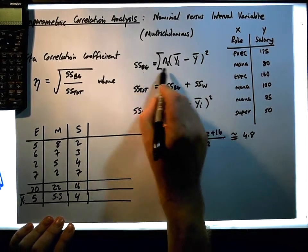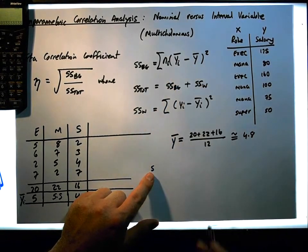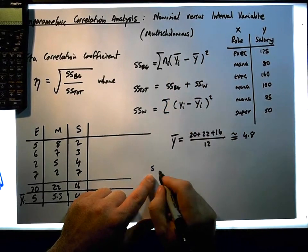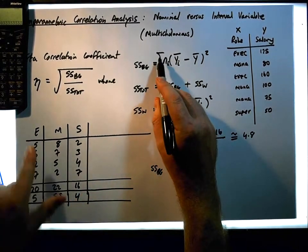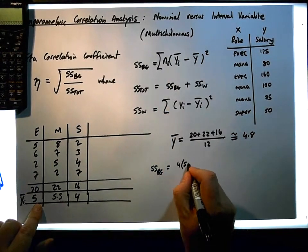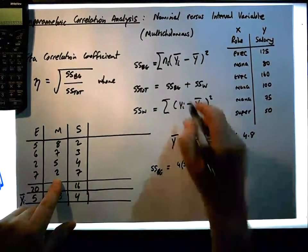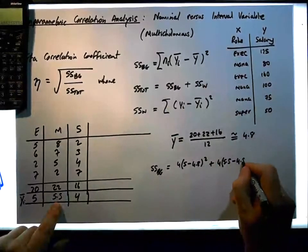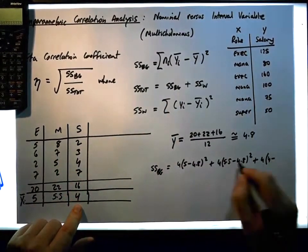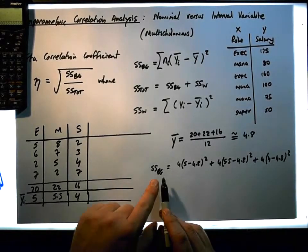Now we can calculate the sum of squares between groups. The sum of squares between groups is going to be the sample size for each group multiplied by its group mean minus the global mean, squared. So: 4 × (5 − 4.8)², plus 4 × (5.5 − 4.8)², plus 4 × (4 − 4.8)². This gives us the sum of squares weighted for each group size of the between-groups measure.